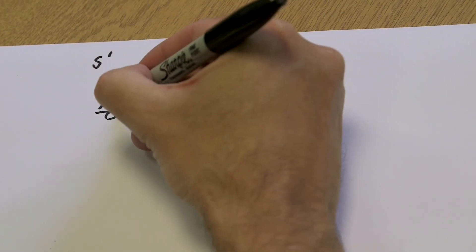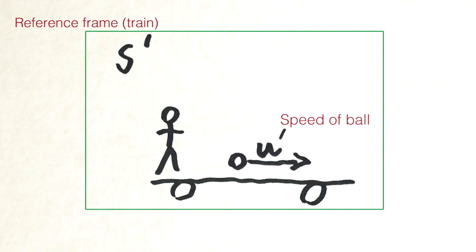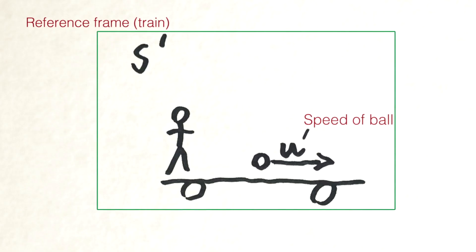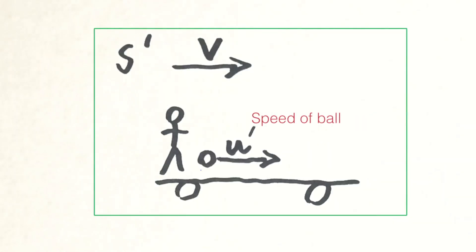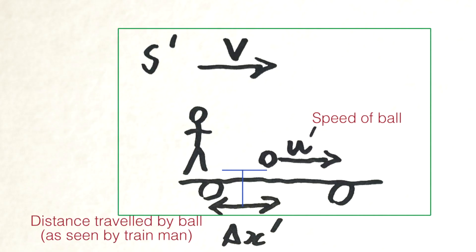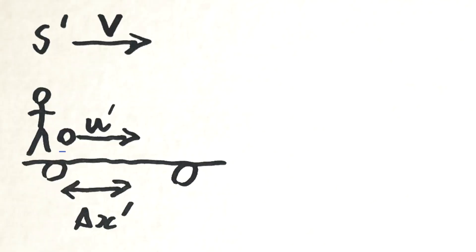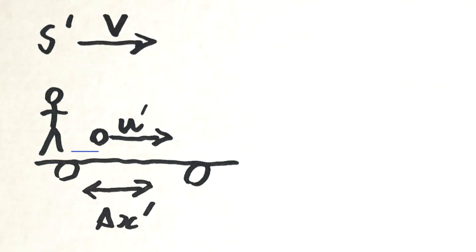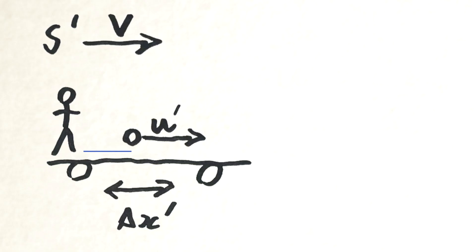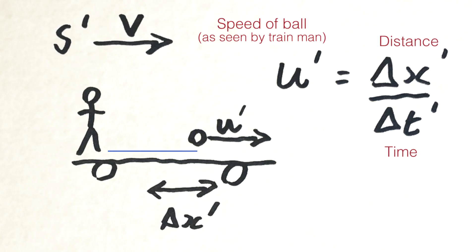The classic thought experiment is: you've got somebody on a train — we'll call that reference frame S prime — and they're going to roll a bowling ball along the train at some speed. The train itself is moving, so this whole reference frame is moving in this direction at some speed V. The way you'd measure the speed on the train is to see how far the bowling ball has gone in your reference frame — delta X prime — and measure the time elapsed — delta T prime — after you let go of the ball. The speed in your reference frame is just delta X prime divided by delta T prime.